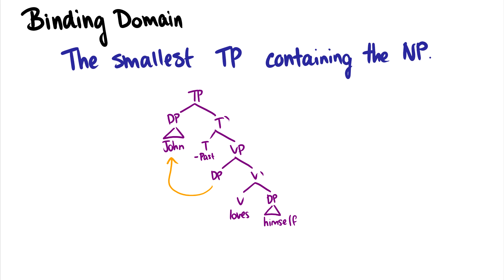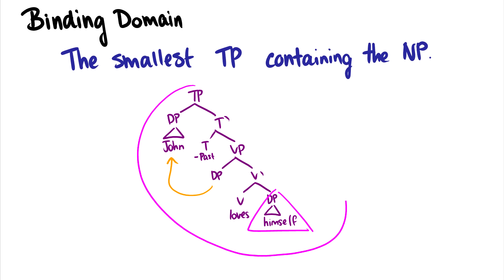In this video we're going to introduce the binding domain and the three binding principles A, B, and C. A binding domain is the smallest TP containing the NP or DP that we're talking about. For instance, in the sentence 'John loves himself,' the binding domain of 'himself' is the smallest TP containing it — so the binding domain for 'himself' is this entire TP here.